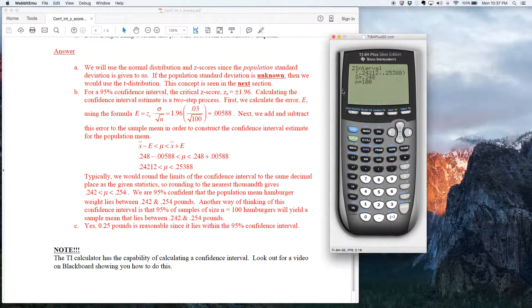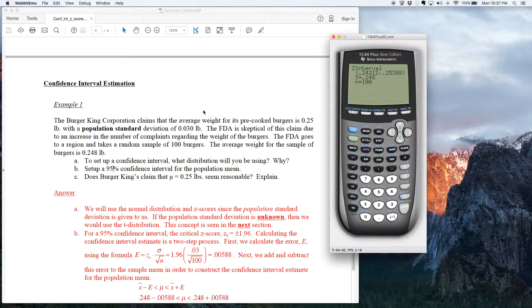So notice when you use the calculator to find the confidence interval, it just gives you the confidence interval. It does not give you the error. So the error, you would have to either use the error formula to crunch it, or if you think about it, the calculator, when it gives you this confidence interval right here, the mean was in the middle, that sample mean. In other words, that 0.248, this number right here, that 0.248 is in the middle of this confidence interval.